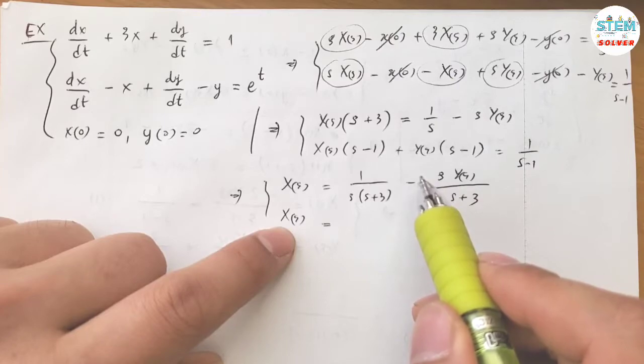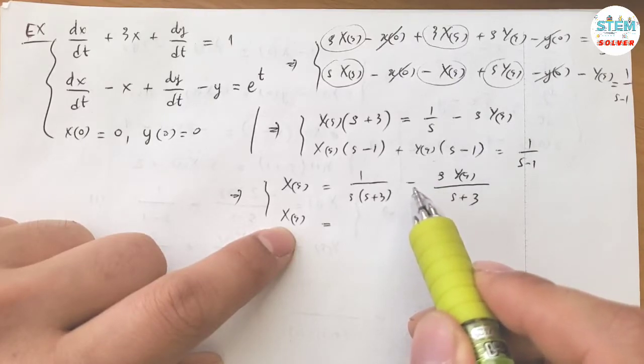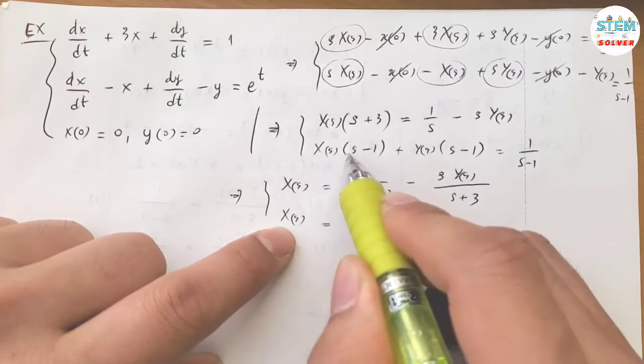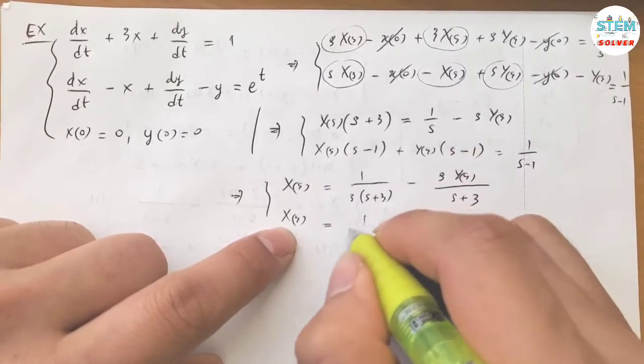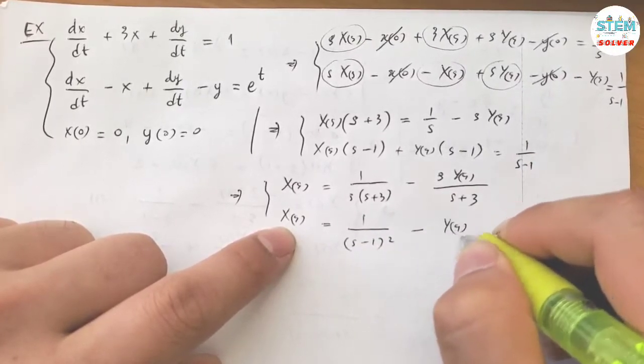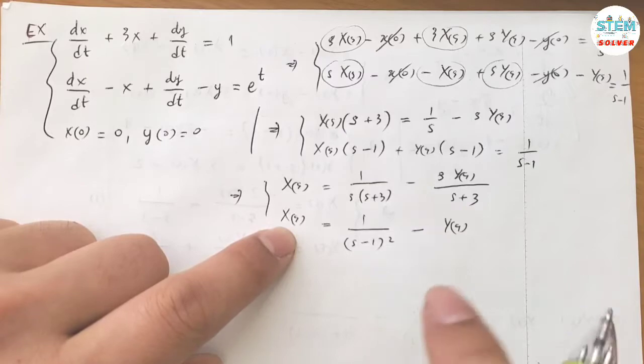I'm gonna solve for X. So I have 1 over S minus 1 squared minus capital Y(S).